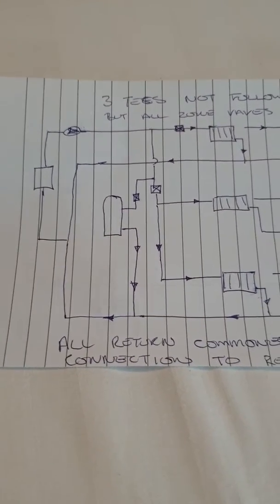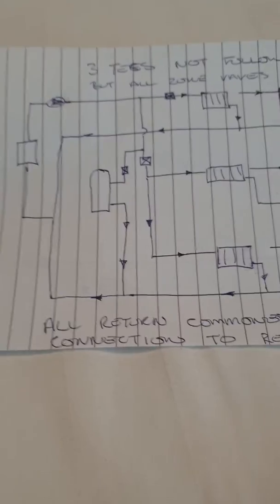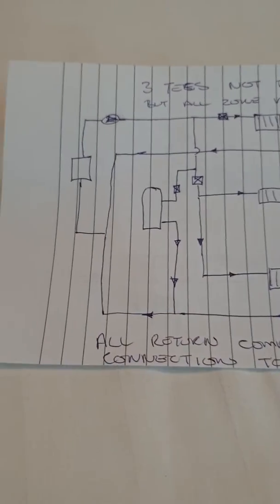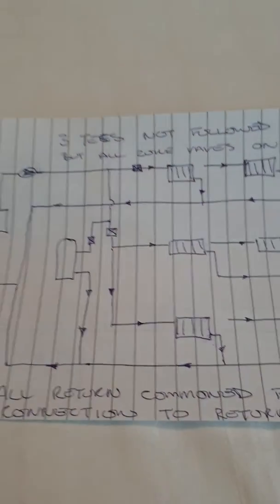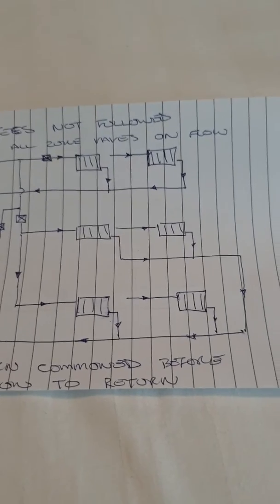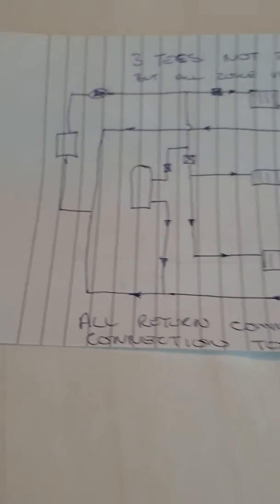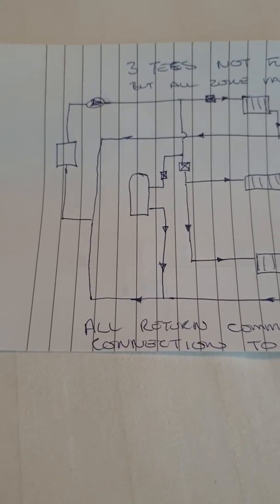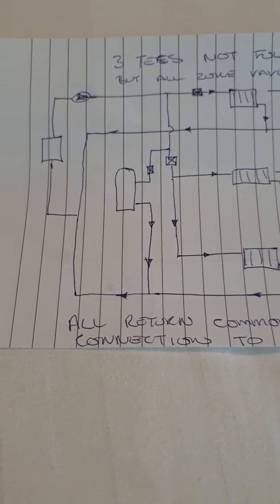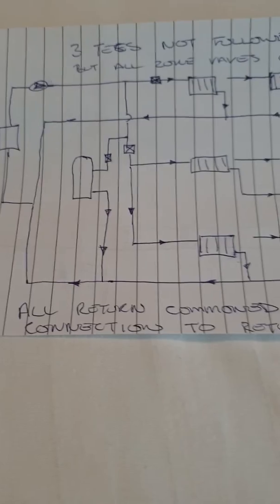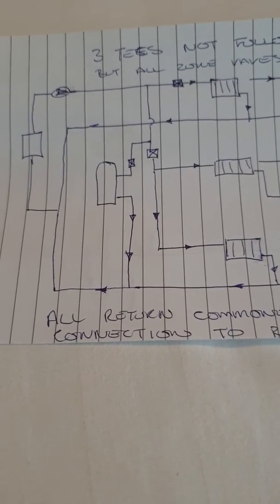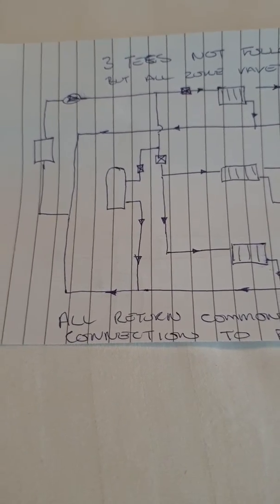So the issue of the three T's rule has come up a few times recently. Now I worked out a long time ago that the three T's rule is another one of those rules of thumb and it's not actually a rule, it's kind of a shortcut if you like, because it doesn't actually need to be followed and there's a better rule which is a rule. And to demonstrate it I've drawn this circuit out.